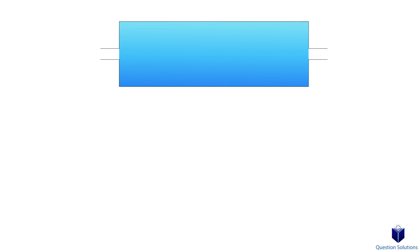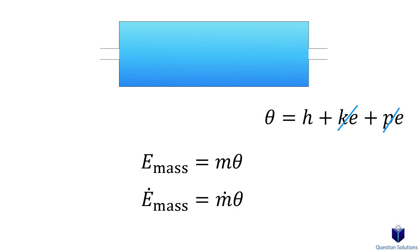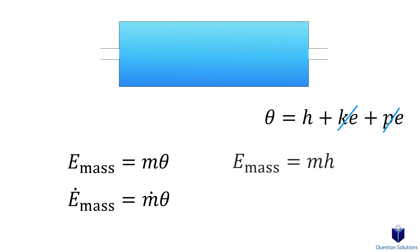When we have mass that enters or leaves a system, the energy associated with the flowing fluid of mass can be written like this. If the mass is flowing at a certain rate, then we can write our equation like this: rate of energy transport.